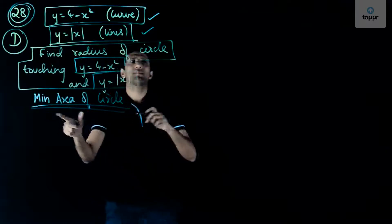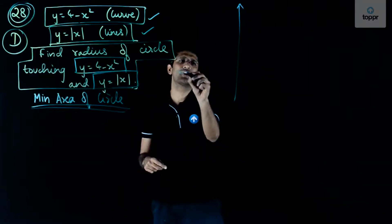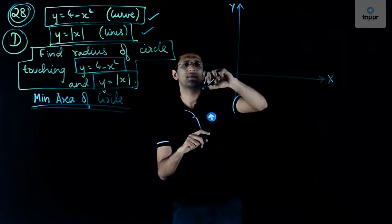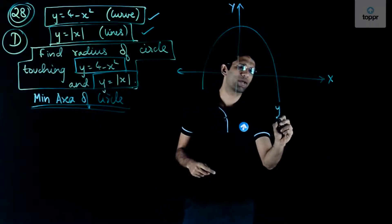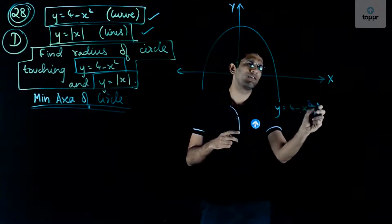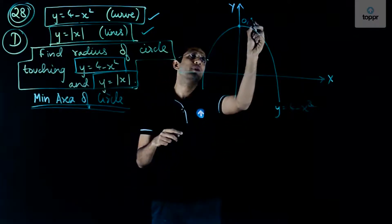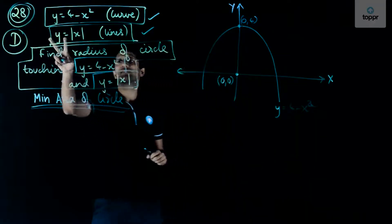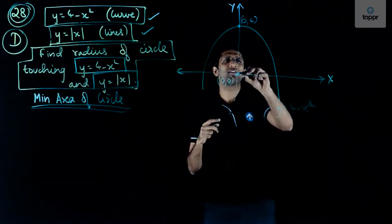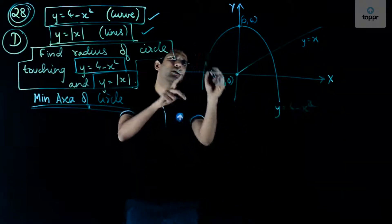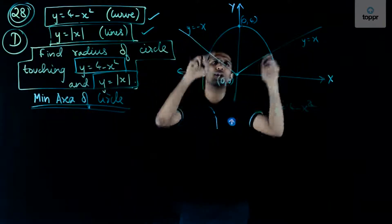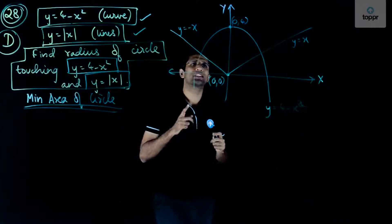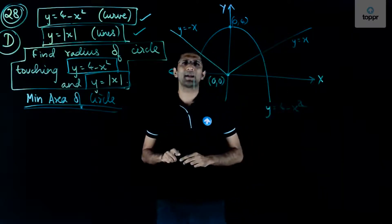The curve y = 4 − x² is an inverted parabola with vertex at (0, 4), since putting x = 0 gives y = 4. The origin is also marked. For y = |x|, we get two lines: y = x and y = −x. We have to find the radius of the circle that touches this parabola and both these lines, with minimum area.